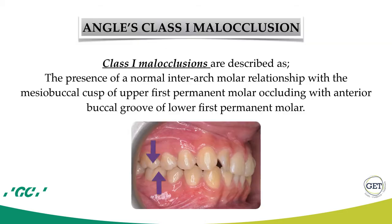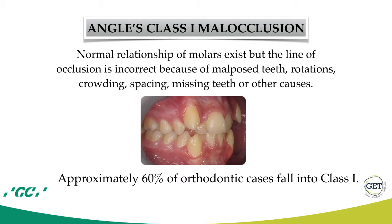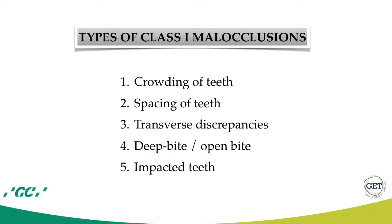Angle's Class 1 malocclusion is described as the presence of a normal interarch molar relationship, with the mesiobuccal cusp of the upper first permanent molar occluding with the anterior buccal groove of the lower first permanent molar. A normal relationship of molars exists, but the line of occlusion is incorrect because of malposed teeth, rotations, crowding, spacing, missing teeth, or other causes. Approximately 60 percent of orthodontic cases fall into Class 1.